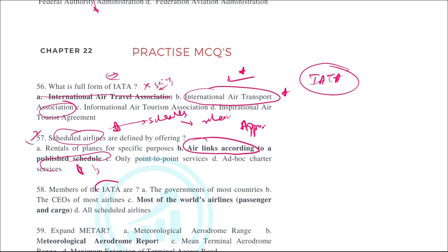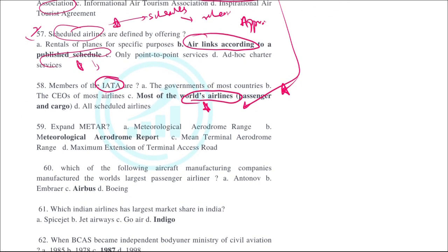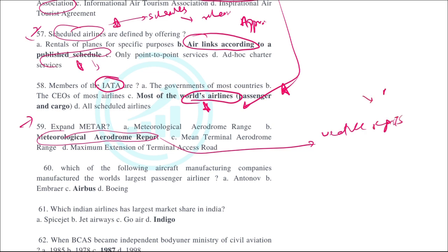The members of IATA are mostly the world's airlines — IATA is the International Air Transport Association. METAR stands for Meteorological Aerodrome Report. These weather reports are necessary in aviation to help pilots understand meteorological conditions at the airport. ATC briefs pilots on weather using METAR reports, which are issued every 30 minutes or one hour. If there is a significant change, a SPECI — a special weather report — is issued.